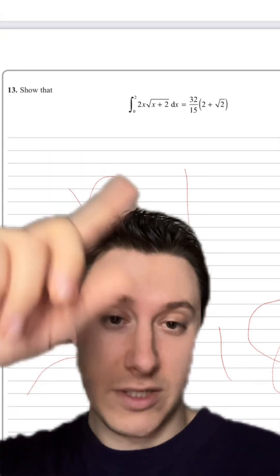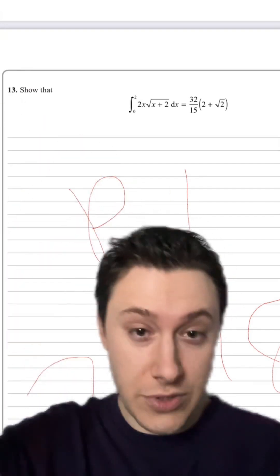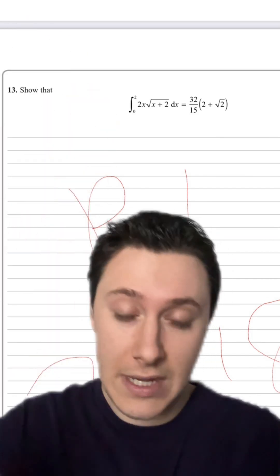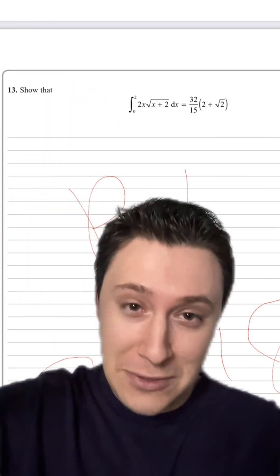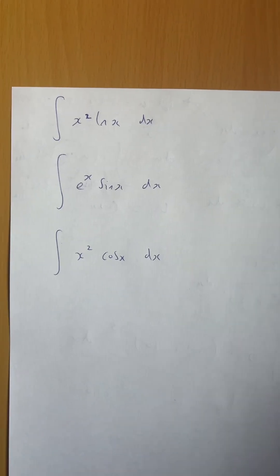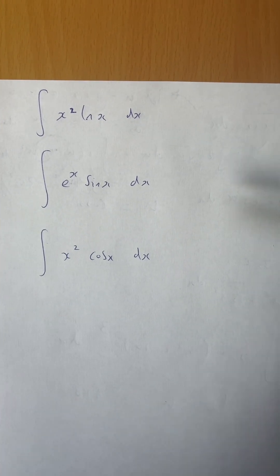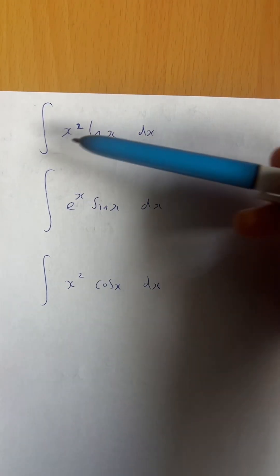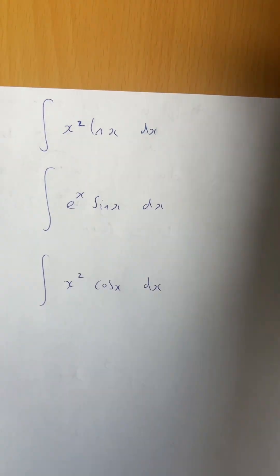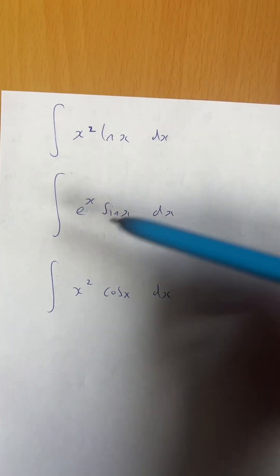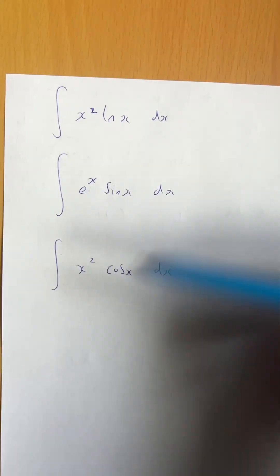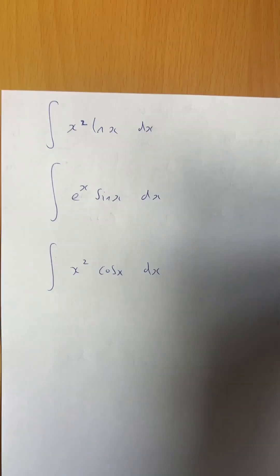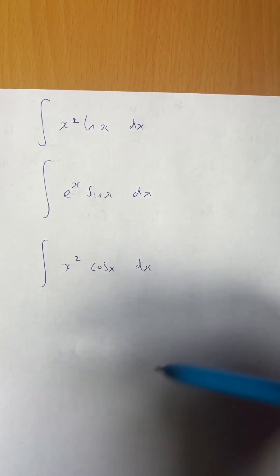I'm not going to stop students doing their favourite method — if you like integration by parts, go ahead. I try to avoid it. But unfortunately, in examples like this where you have the product of two different types of functions — like x squared times a log, or an exponential times a trig function — you're going to have to do integration by parts. There's no other way; you have to use integration by parts.